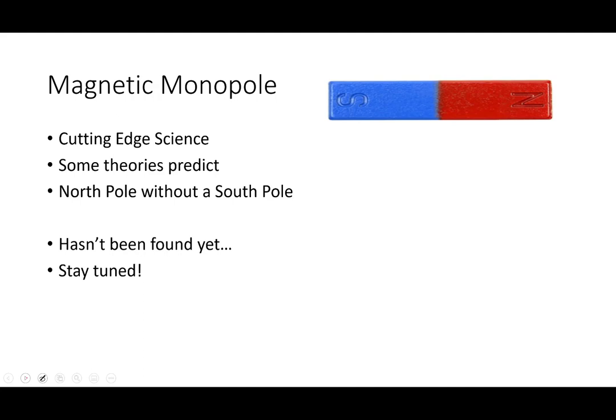One last thing before we leave this, and that is the idea of a magnetic monopole. Mono means one, pole means north or south pole. This is cutting edge science that people are looking for right now.